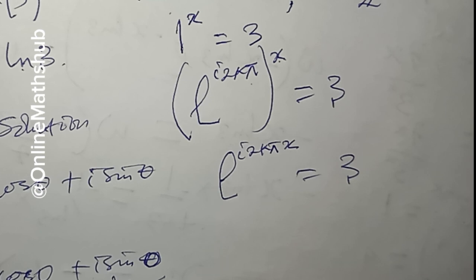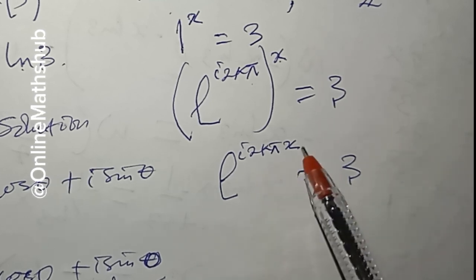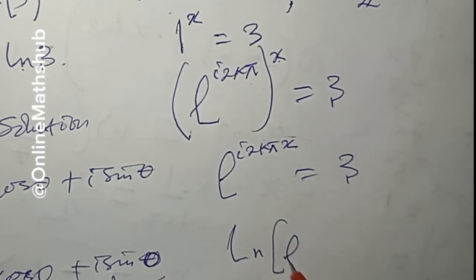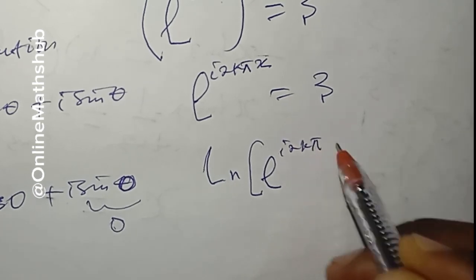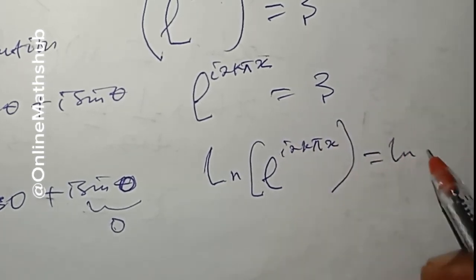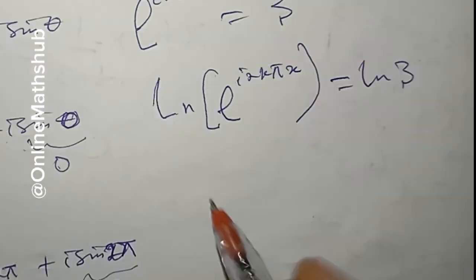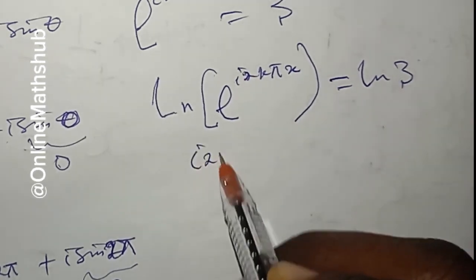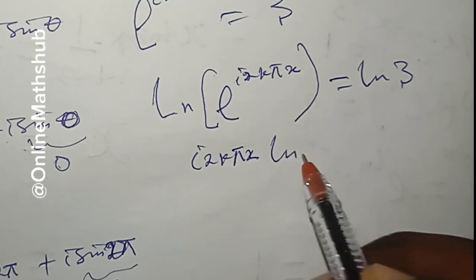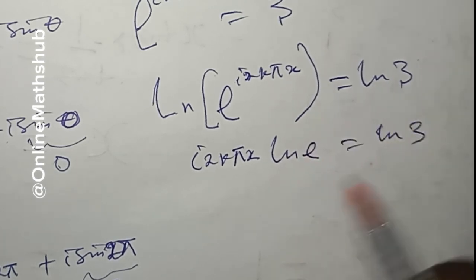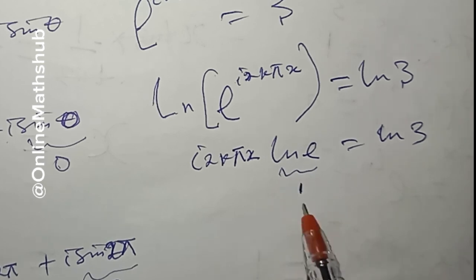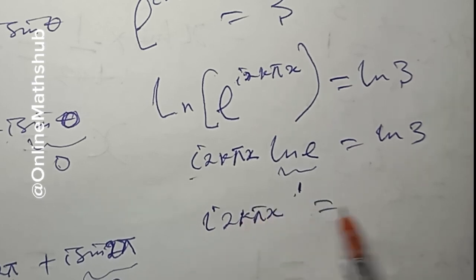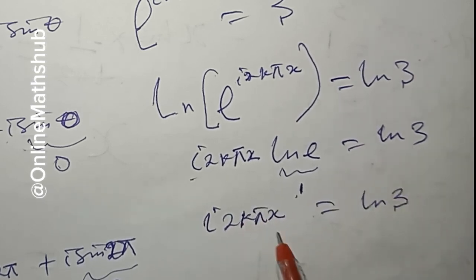Like we've done before, we take the natural log of both sides so we can bring the exponent down: ln(e^(i·2kπx)) = ln(3). Using the property of logarithms, the exponent comes down: i·2kπx · ln(e) = ln(3). Since ln(e) = 1, we are left with i·2kπx = ln(3).